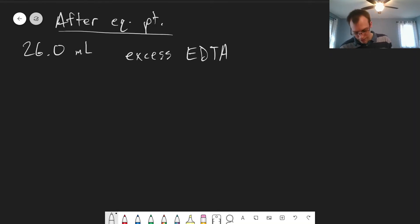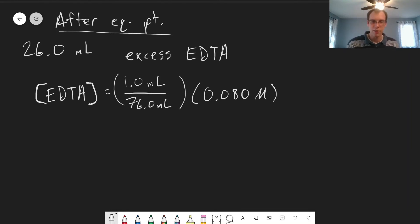For the excess EDTA, we need to figure out how much there is. We have one milliliter excess, and we divide that by our total volume of 76 milliliters. This is our dilution factor, which is multiplied by the concentration of EDTA we're using in the titration.